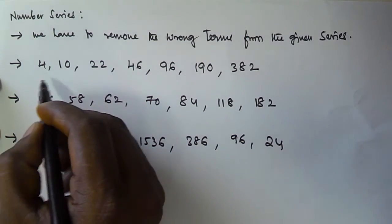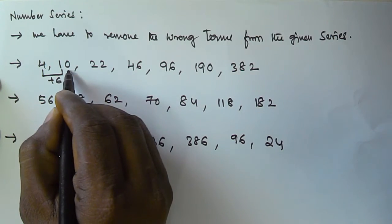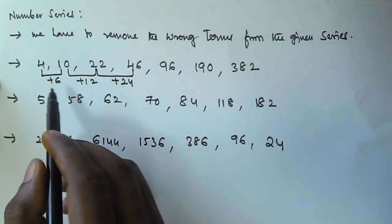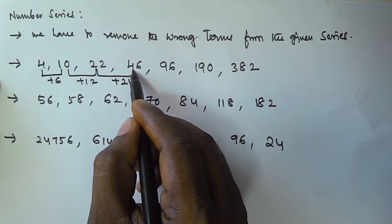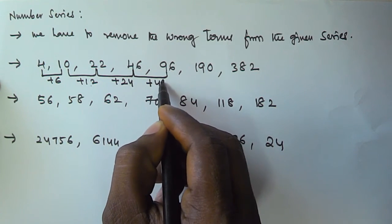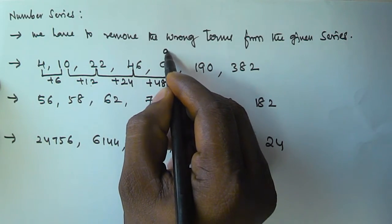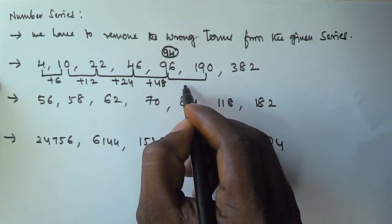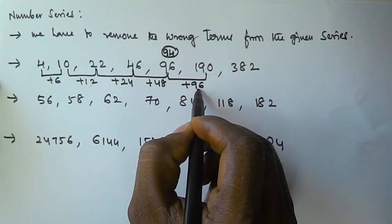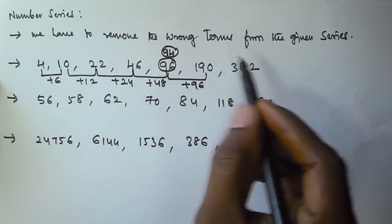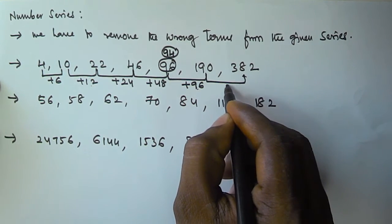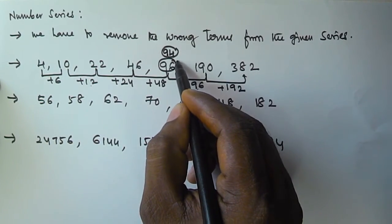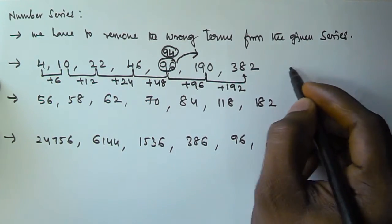For the first problem: from 4 to 10 is plus 6, from 10 to 22 is plus 12, and from 22 to 46 is plus 24 — the differences are doubling. So the next difference should be 48, meaning 46 plus 48 equals 94, but we have 96. Then 94 plus 96 equals 190, and 190 plus 192 equals 382. So the wrong number is 96, and it should be replaced with 94.